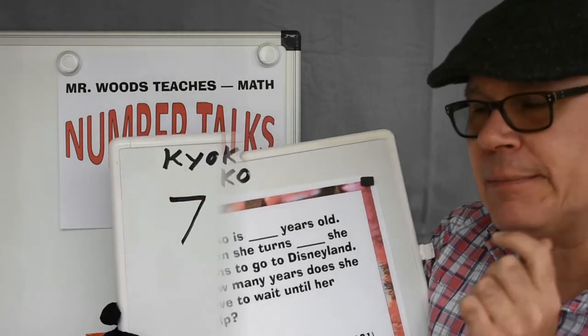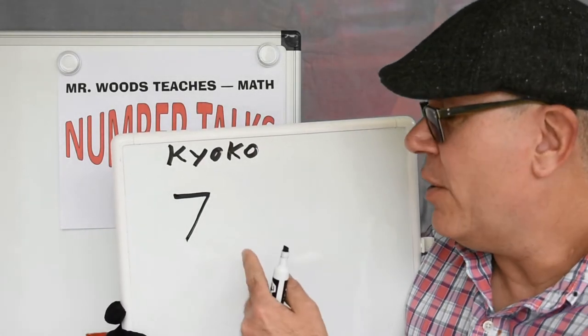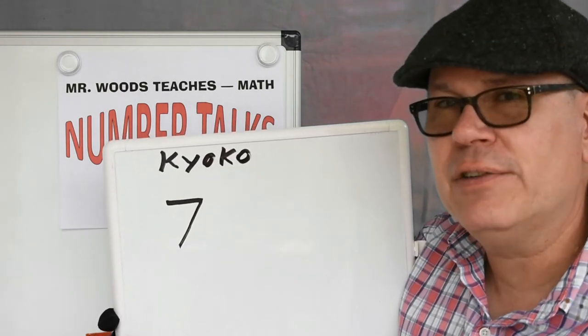Let's take a look at that. Okay, Kyoko is seven. How many years until she turns ten?